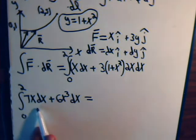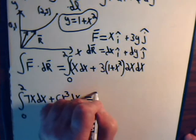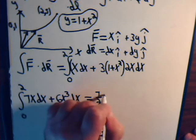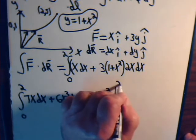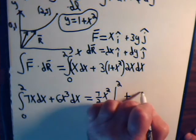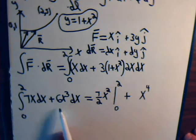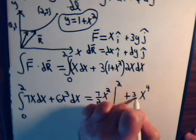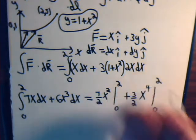That's 1 half x squared. So we'll have 7 halves x squared. x goes from 0 to 2. Plus, this would be x to the 4th over 4. 6 divided by 4, that's the same as 3 divided by 2. And x goes from 0 to 2.